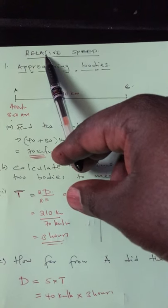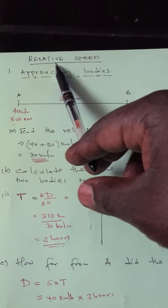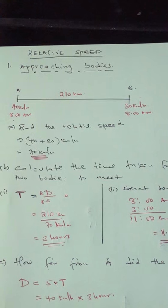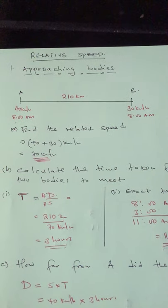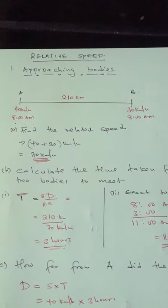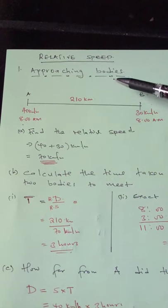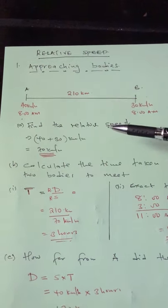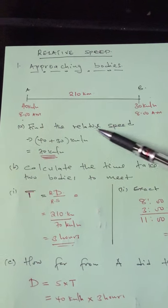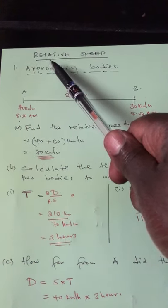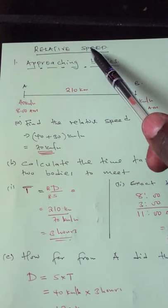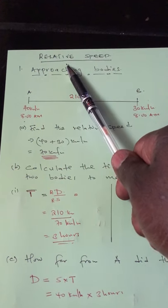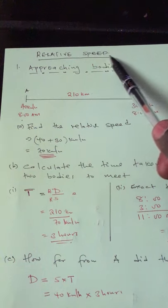When you say 'relative,' it simply means you're comparing more than maybe two things — comparing. Relative speed means I'm comparing the speeds of two bodies, and that's why it's called relative speed.